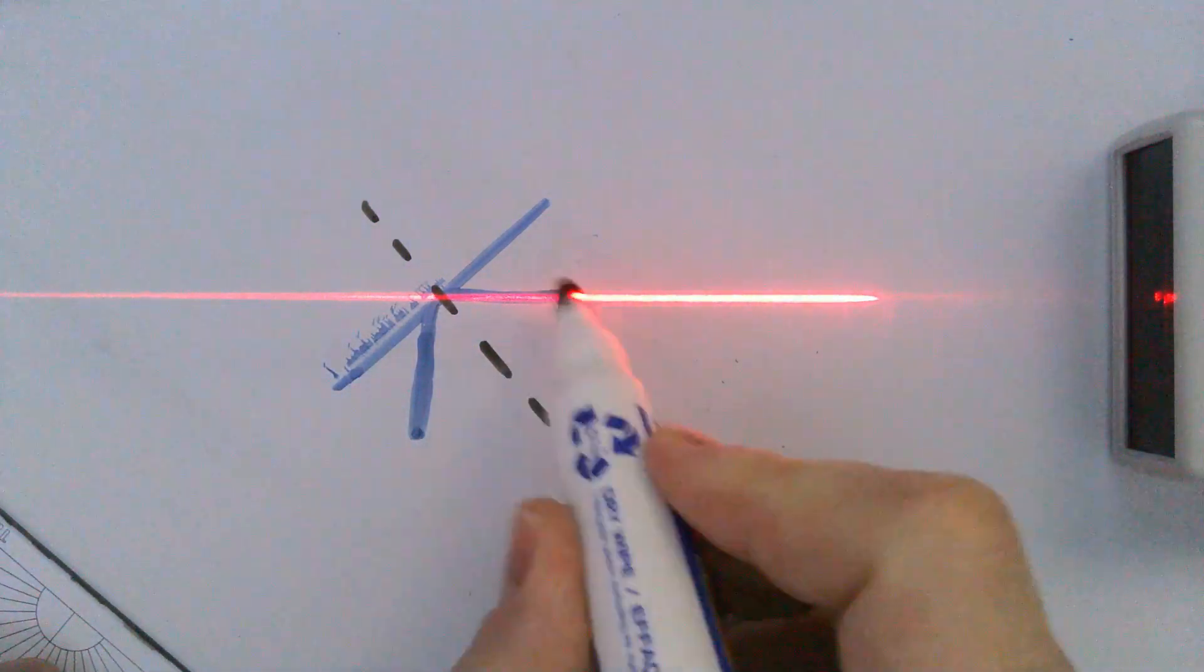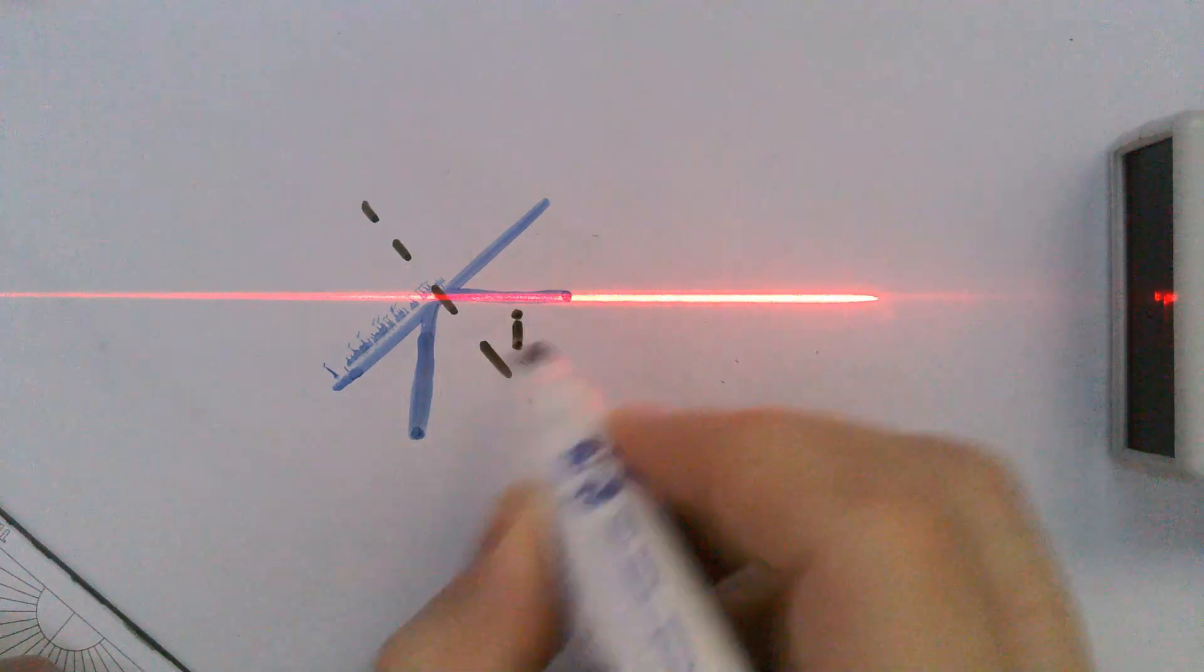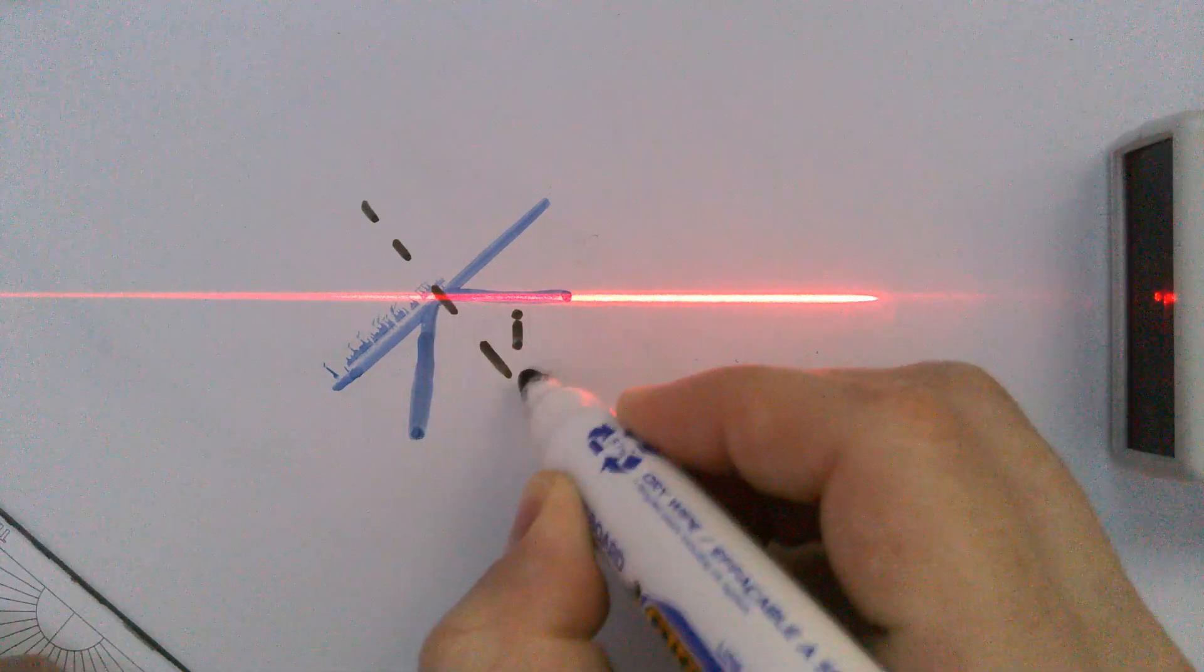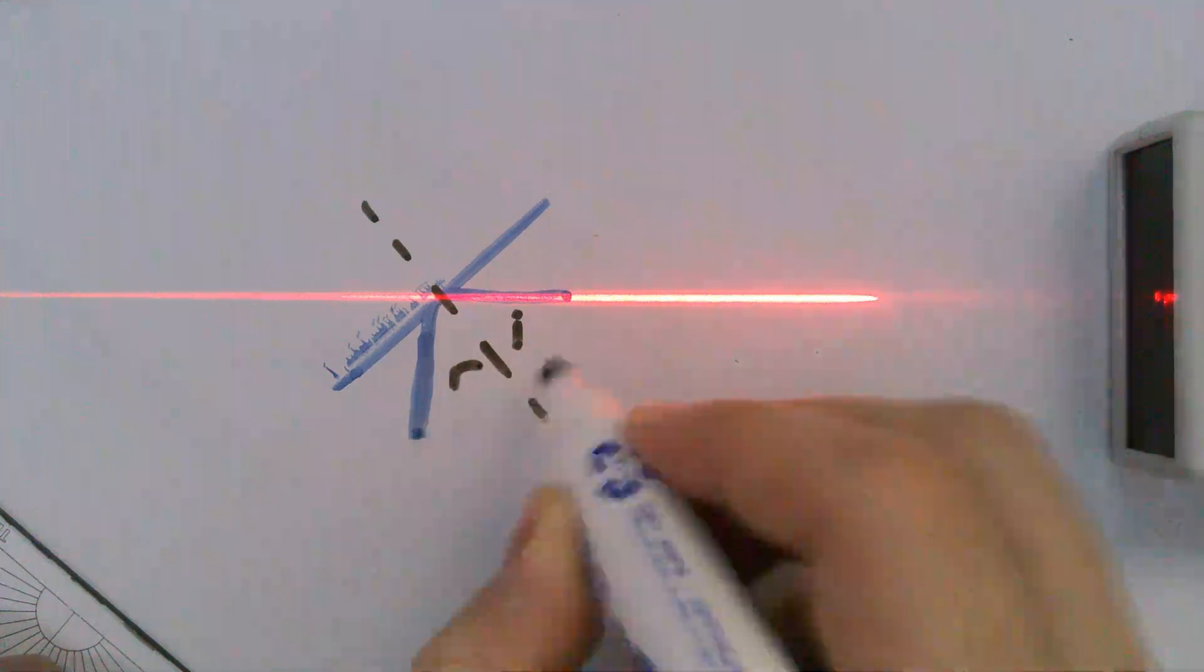And what we'll notice is the angle coming in and the angle coming out, they look very equal, and if we actually measure them, we'll actually find they're the same. So the angle of incidence, if this is the incident ray, then the incident angle is the one made with the normal. And the angle of reflection are both the same.